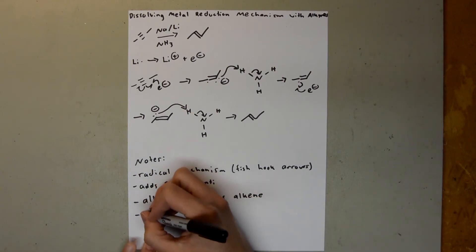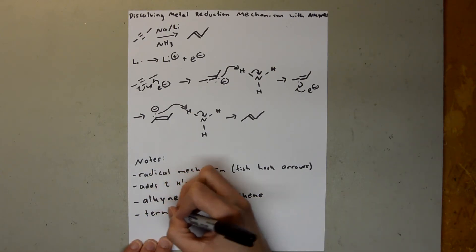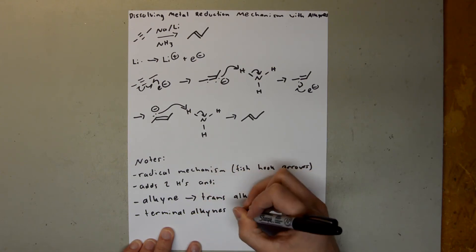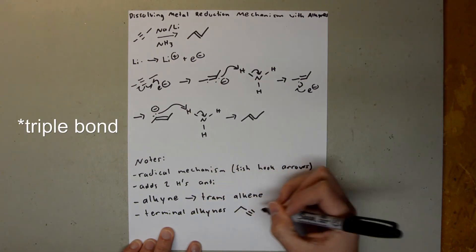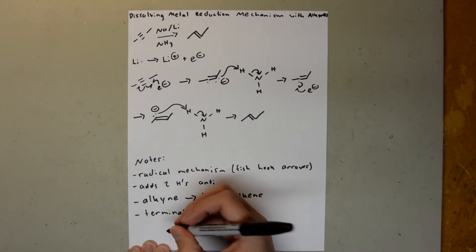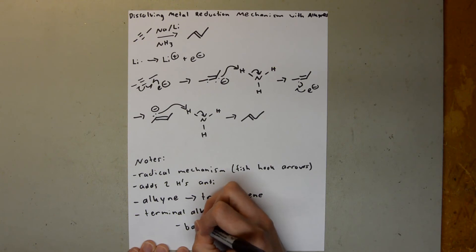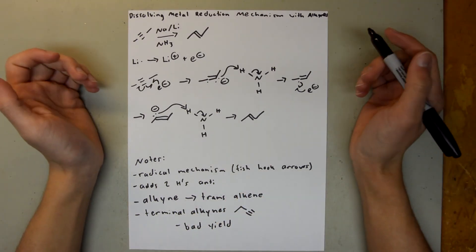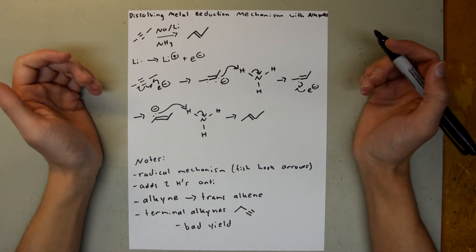And lastly, you want to be careful with terminal alkynes. So something like this, where the alkyne is on the end of the molecule. Because doing dissolving metal with a terminal alkyne will result in a bad yield of your desired product. So typically, dissolving metal reduction is not a good thing to use on terminal alkynes.